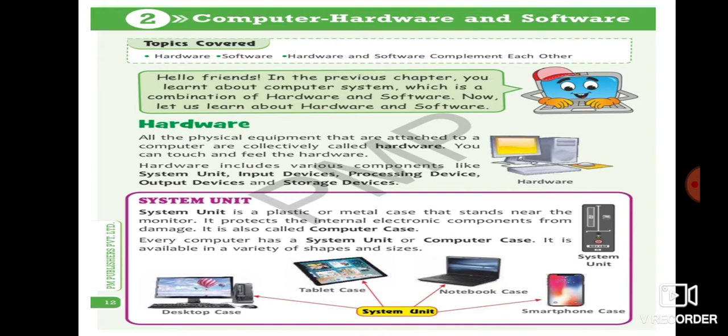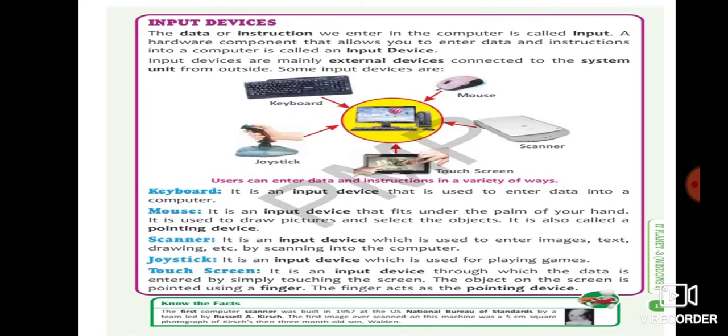Computer case or system unit. So here you can see some of the examples like desktop case, tablet case, notebook case, smartphone case. So here you can see for protecting these things or these machines it is covered with a plastic thing or a metal thing. That's why it is known as system unit.